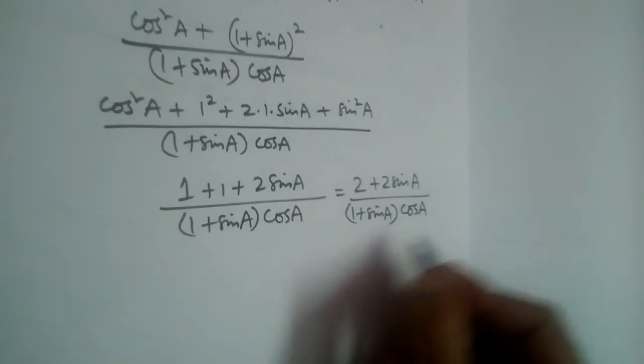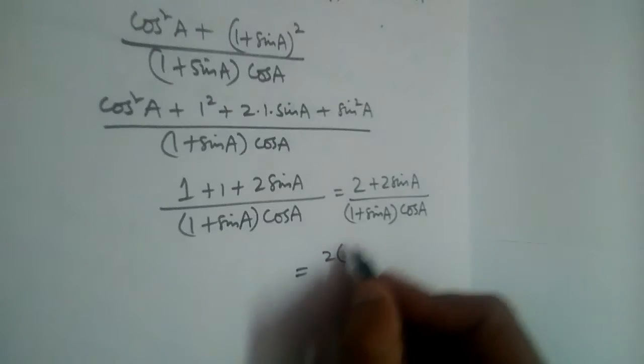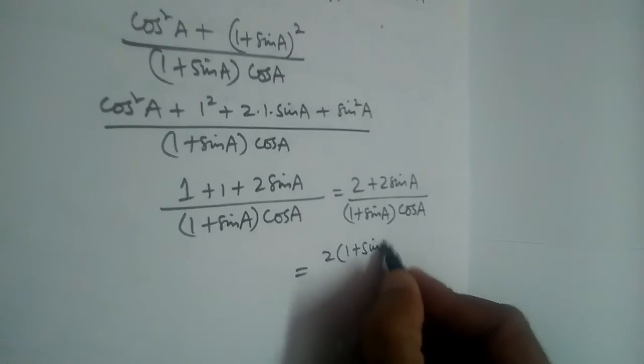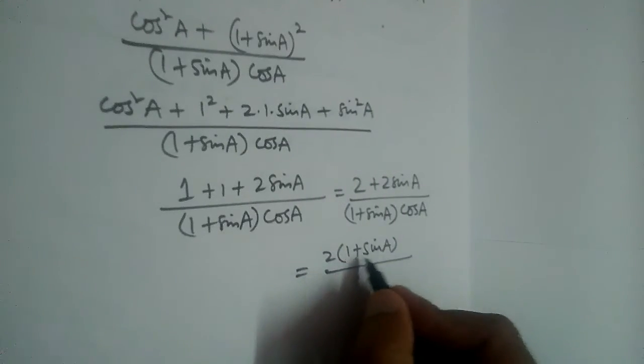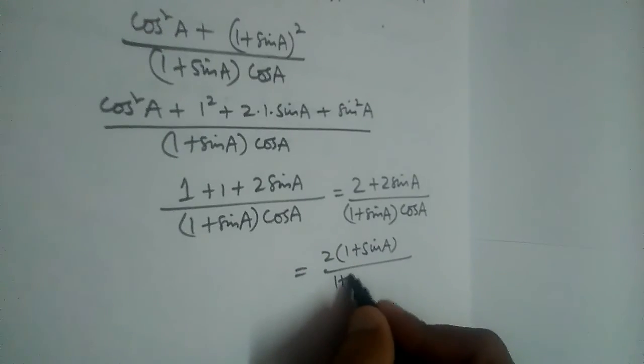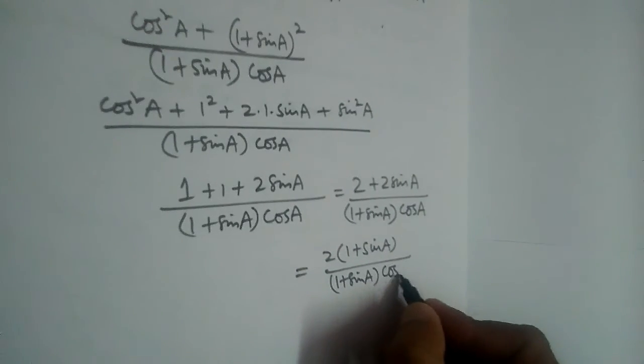Can we take 2 common in the numerator? Yes, so we'll be left with 1 plus sine A inside the bracket. So 2 into 1 plus sine A divided by 1 plus sine A multiplied by cos A.